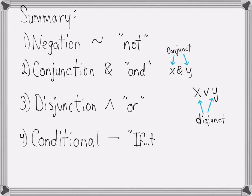Last, we've got the conditional which we indicate with an arrow for which we say if then. For the statement 'x implies y', x is the antecedent and y is the consequent.